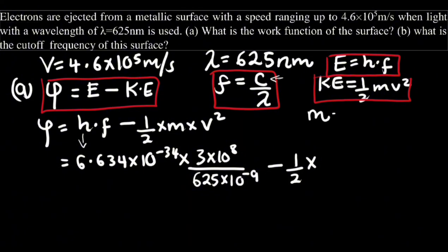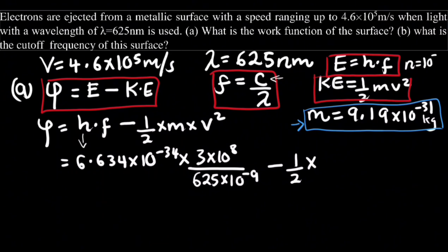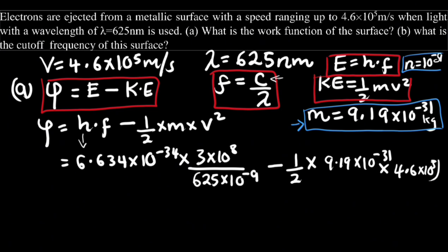The mass of an electron is equal to 9.19 times 10 to the power negative 31 kilograms. We use this mass because we are told electrons are ejected from the metallic surface. We took 10 to the power negative 9 because the wavelength is given in nanometers, and nano equals 10 to the power negative 9. We continue: multiplied by the mass, 9.19 times 10 to the power negative 31, multiplied by the velocity squared, where the velocity is 4.6 times 10 to the power 5, squared.